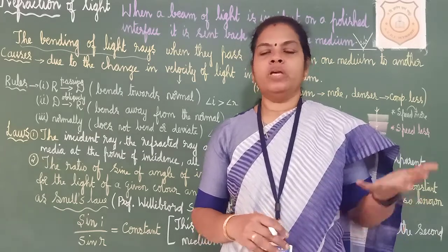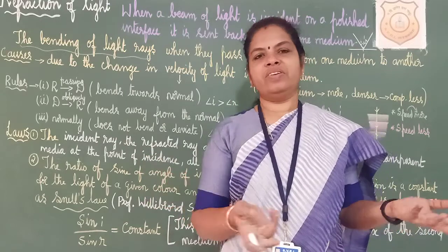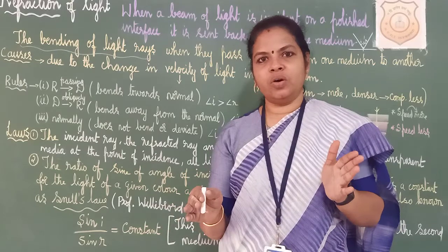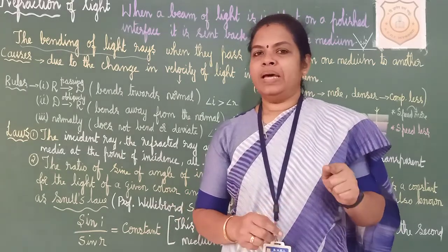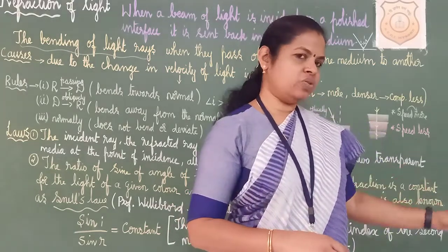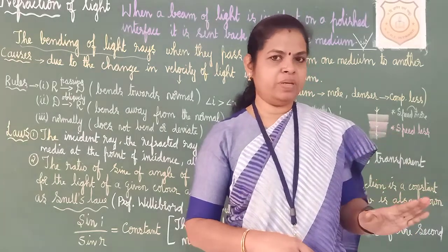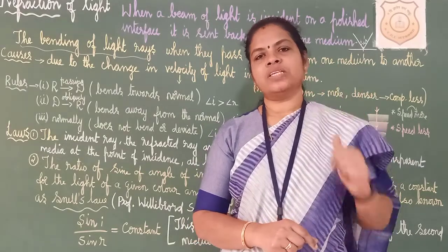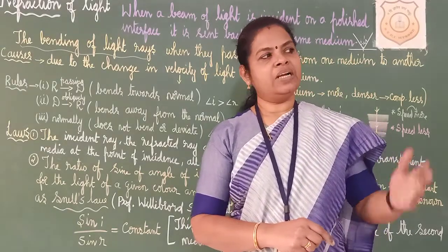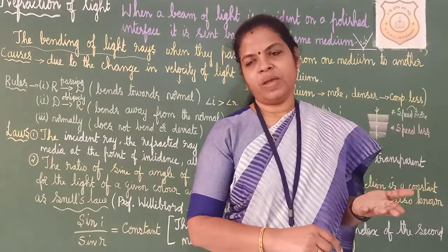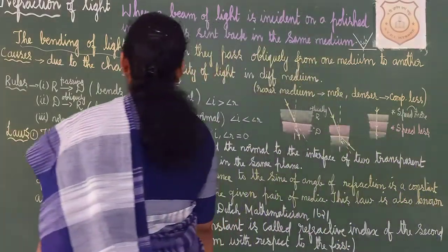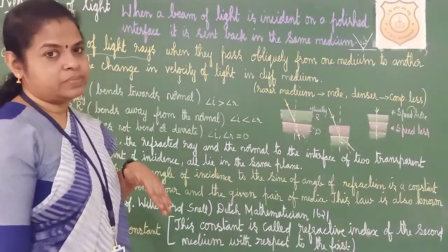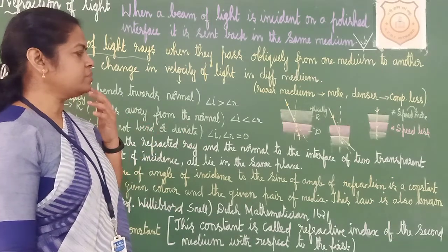For example: at home you will be running, jumping, sitting wherever you like. But after coming to school it is restricted — in the classroom you should sit, focus on what the teacher is doing, you can't do whatever you like. Same way here, refraction is due to the velocity of light being different in different media. In each medium, the velocity differs.